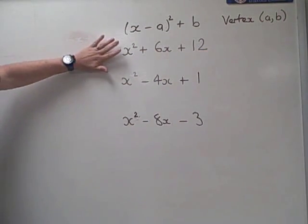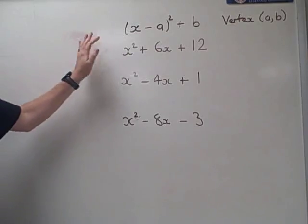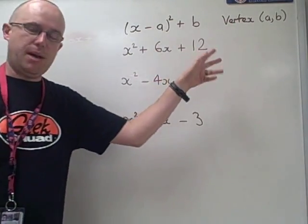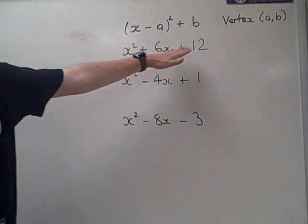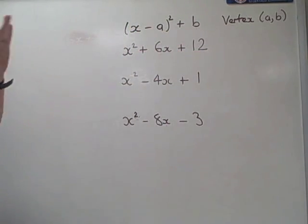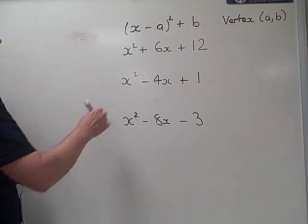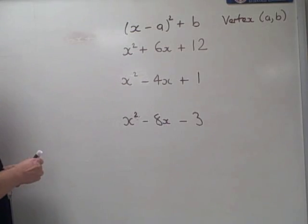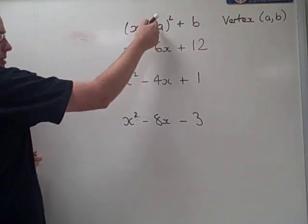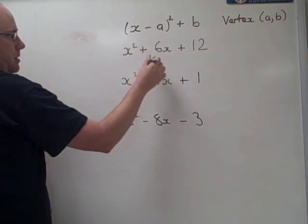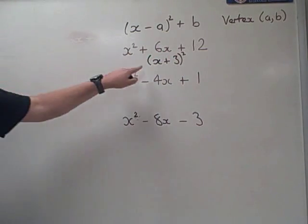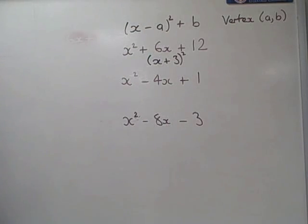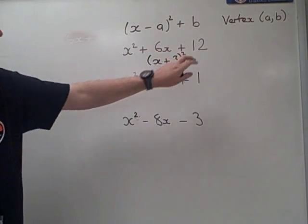Now I'm going to use a slightly different method from what most teachers will show you because most teachers have equal to 0 here and then they use a method of moving something to the other side of the equal sign. But if we don't actually have an equal sign and we just have an expression like this, then actually we can't do that. So what we actually need to do is we need to take half the coefficient of x and then we're going to plug that into this formula here. So half of positive 6 is positive 3. And notice it looks like this form now.